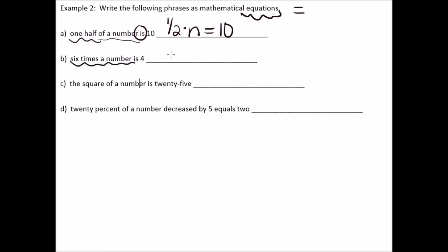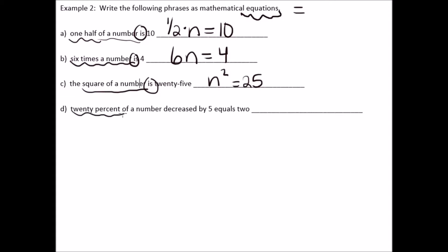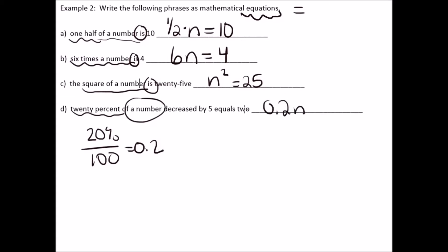Six times a number — that's 6n — is 4. The square of a number: take the number and square it, equals 25. And 20% — when we divide by 100 that's 0.2 — of a number, decreased by 5, so minus 5, equals 2. And those are mathematical equations.